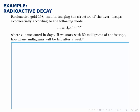The first thing we'll do then is fill in everything we know in the model. So the amount at any given point in time is the original amount, which we're told is 50, times E to the negative 0.2596, that was given in the model, times T.